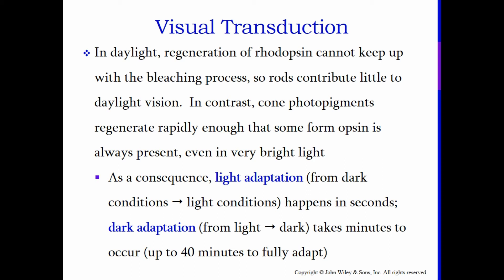In daylight, regeneration of rhodopsin cannot keep up with the bleaching process, so rods contribute little to daylight vision. In contrast, cone photopigments regenerate rapidly enough that some form of opsin is always present even in very bright light. If you've ever walked from sunlight into a dark room, you've experienced this — you walk in and cannot see. You have to wait a few minutes, sometimes up to 10 minutes, for the rods to regenerate. Then your low-light vision kicks in. Light adaptation from dark to light conditions happens in seconds, but dark adaptation from light to dark can take minutes — in some cases up to 40 minutes for full adaptation.